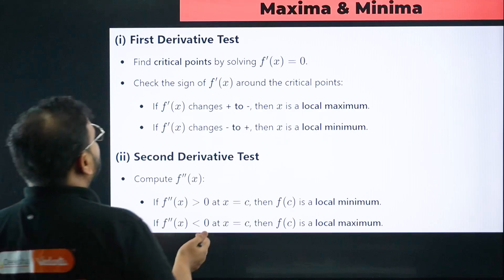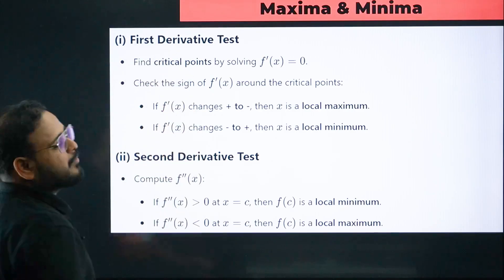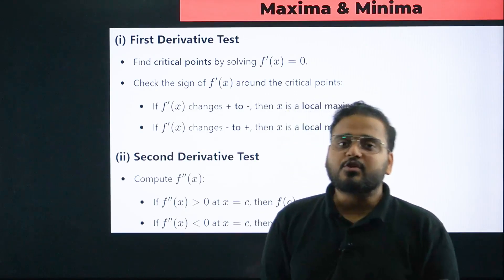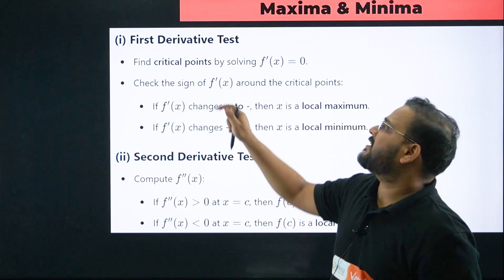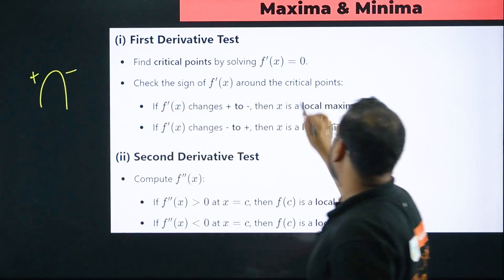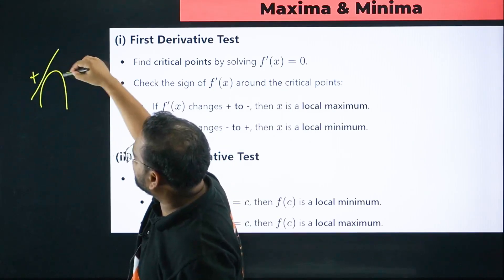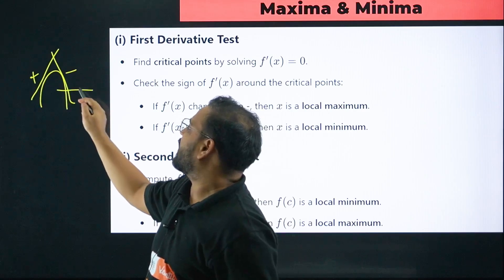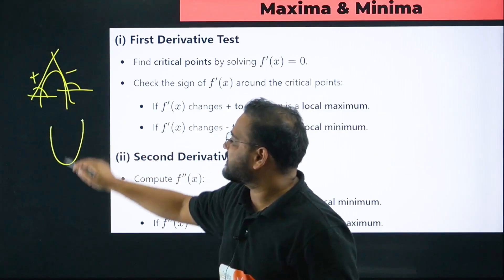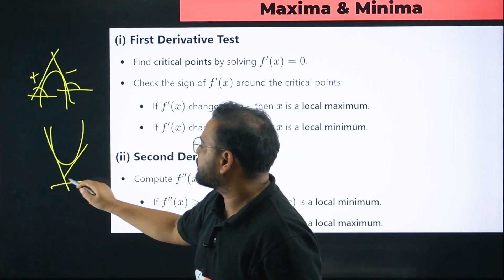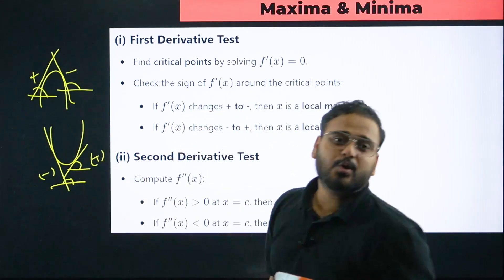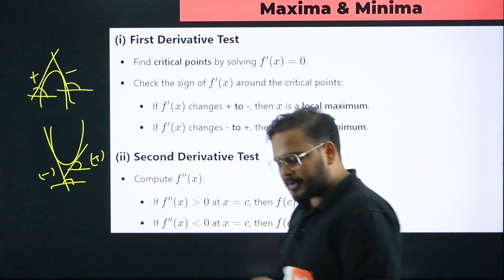For maxima and minima: the first derivative test is sometimes more useful because finding the second derivative can be difficult — for example, if a quotient rule is involved in the second derivative. Using the first derivative sign change: plus to minus means local maxima, because the slope goes from positive to negative. Minus to plus means local minima, because the slope goes from negative to positive.